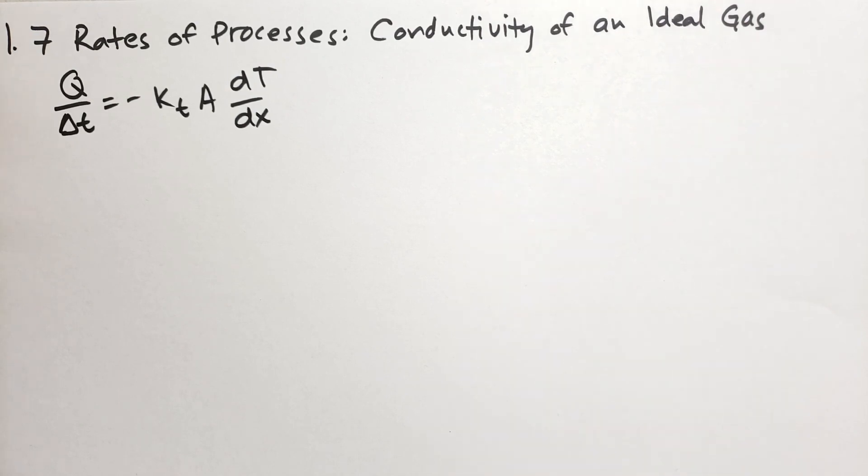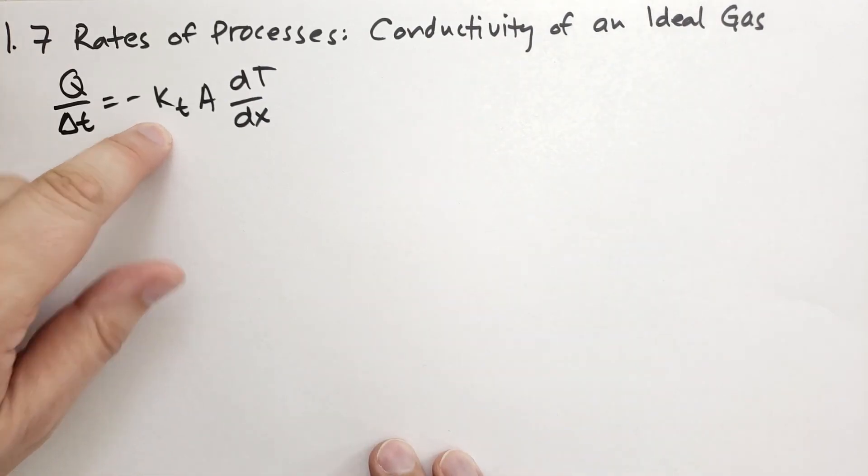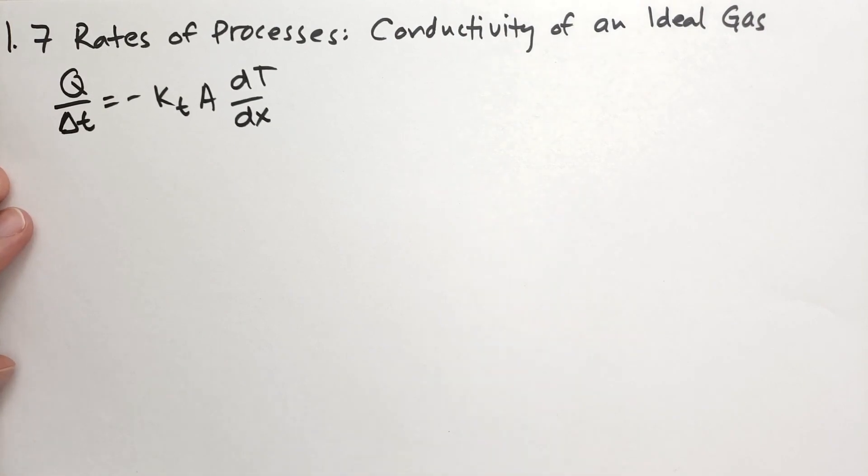The kT depends on the material that it's flowing through. And we've calculated, or rather, we've talked about some of the values for some common substances you might run into. In this case, we're going to calculate the kT for an ideal gas. We're going to need some help. We're going to have to use a little bit of kinetic theory, drawing on some of our experience from section 1.2.